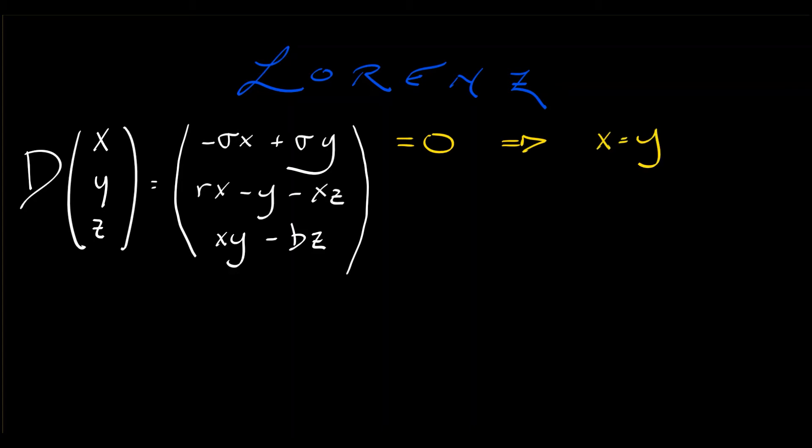Now, substitute that into the second equation. Set it equal to zero. I'm going to say y equals x, and then factor out an x. I get x times quantity r minus 1 minus z equal to zero. This gives us two possibilities. Either x is equal to zero,